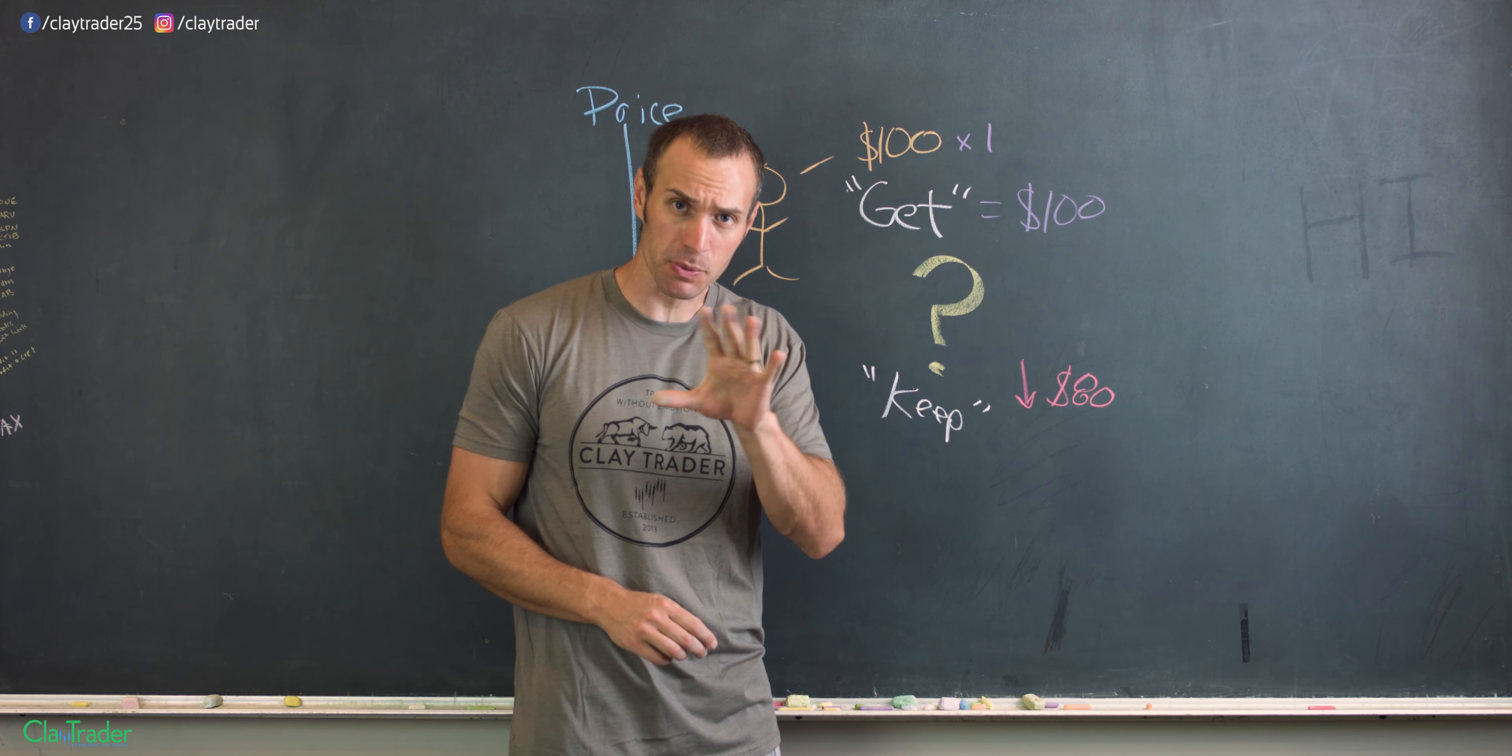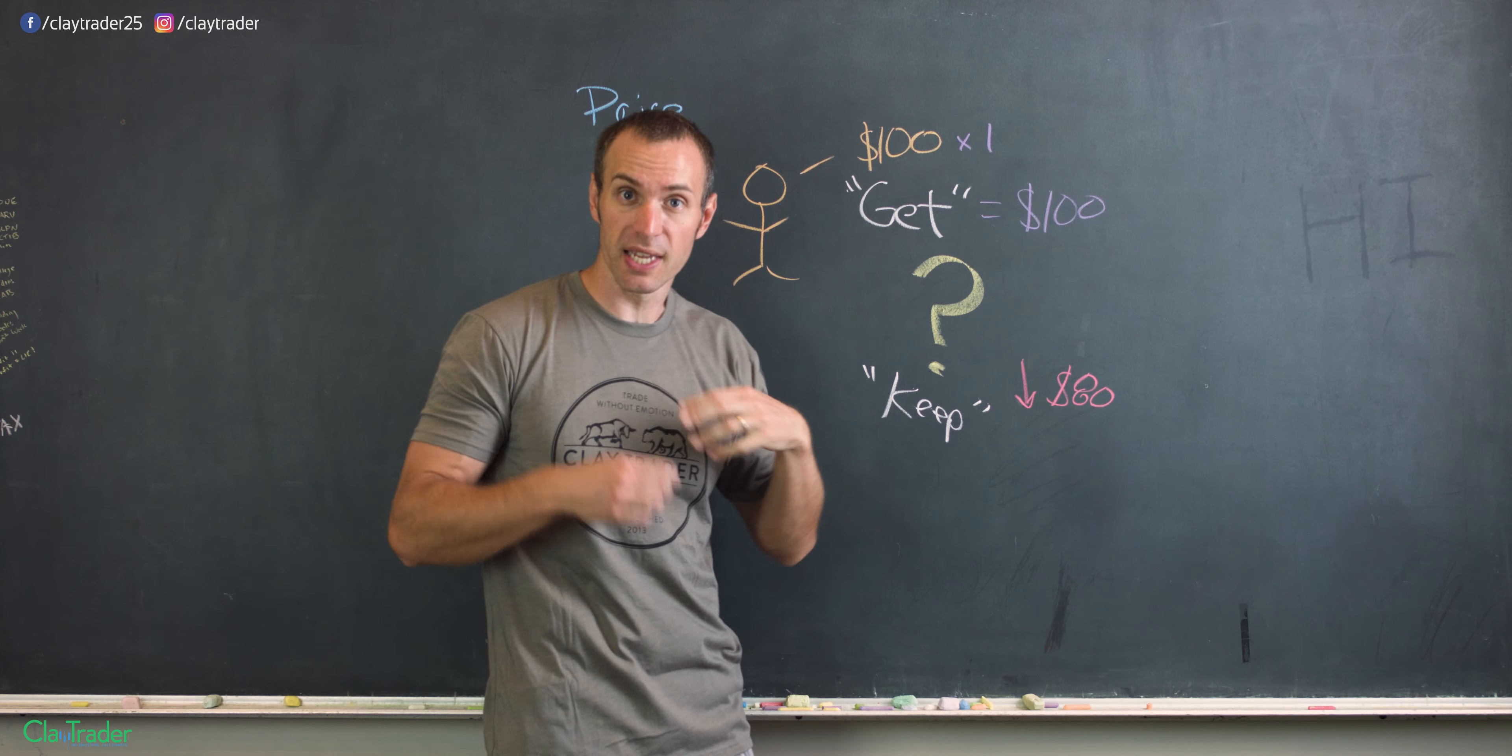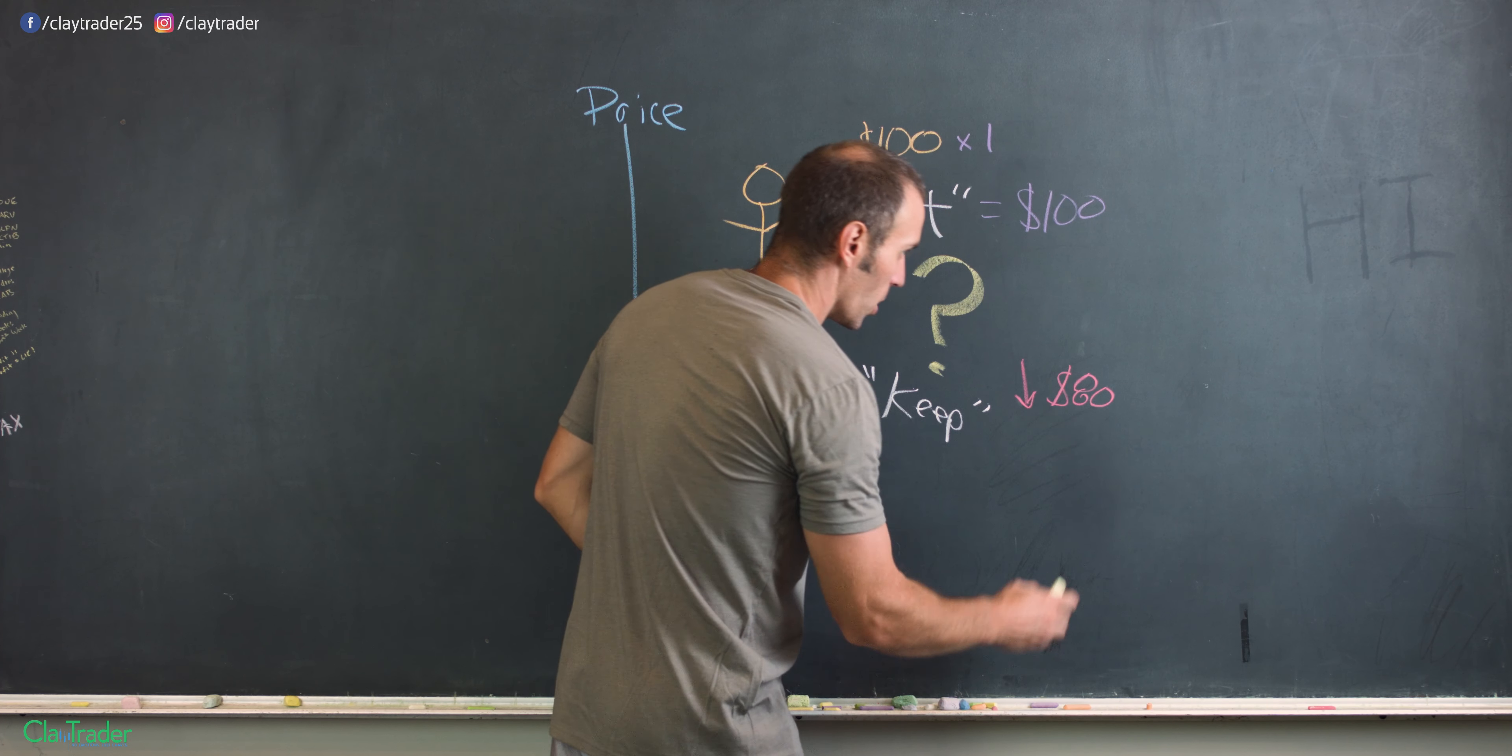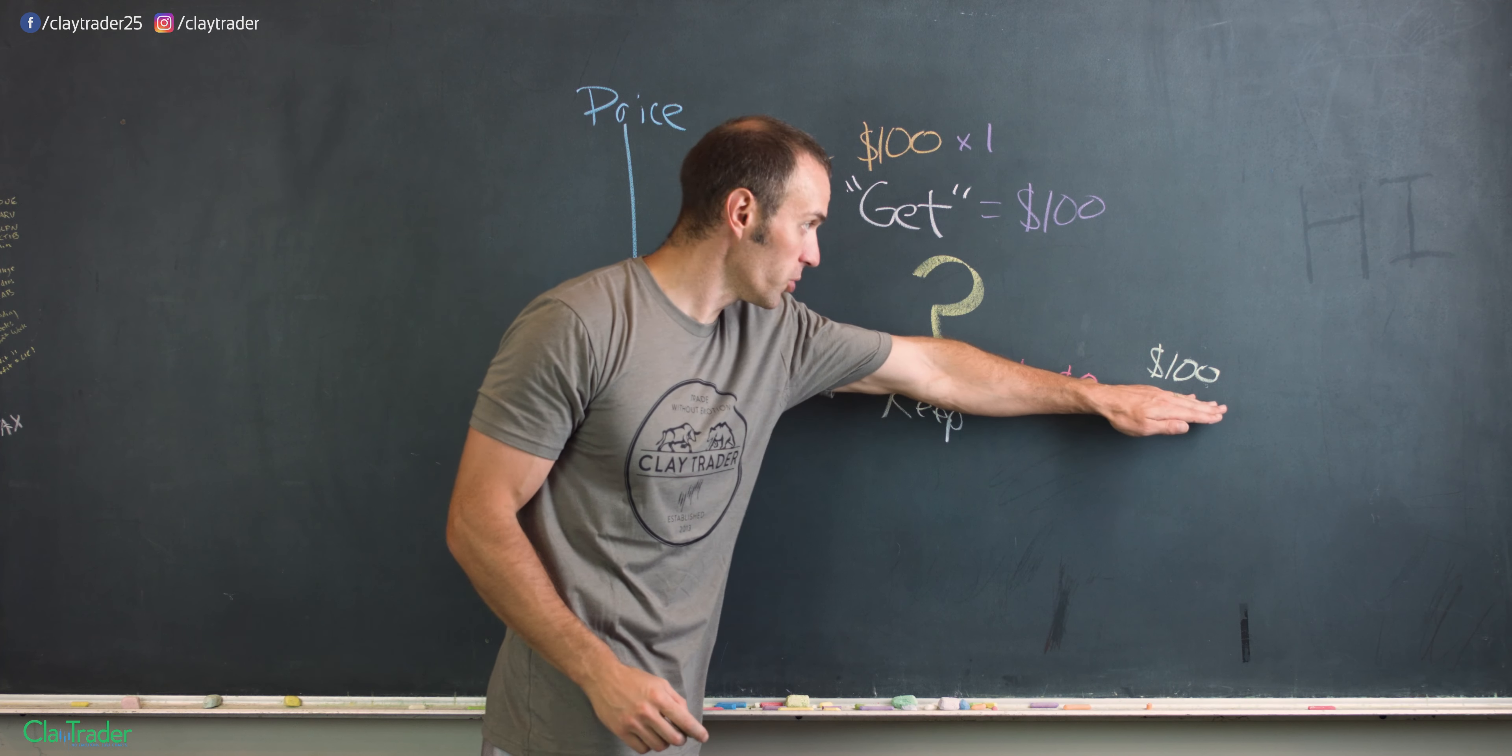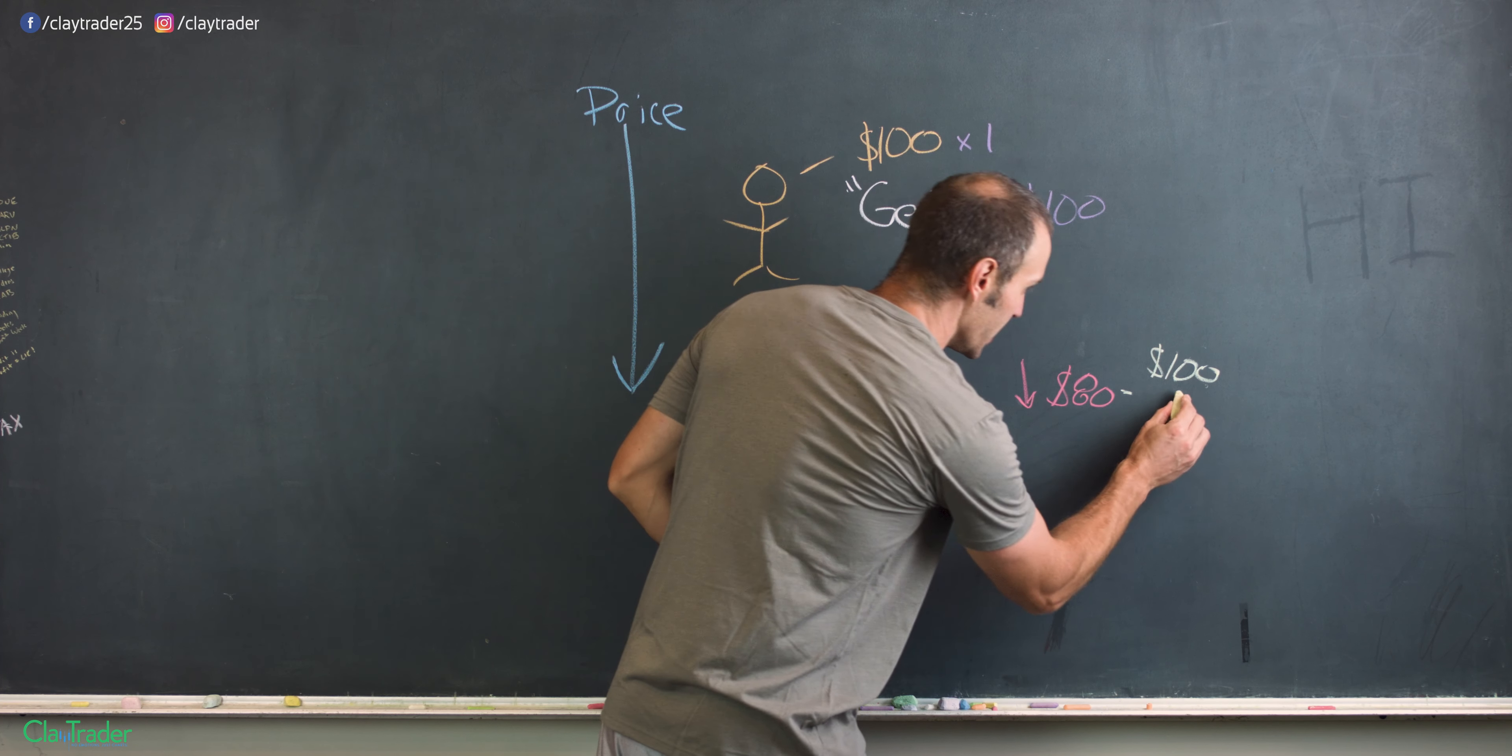How much money does John have, though? Well, he's got $100 to go out there and do shopping with. That's what he got when he sold. So what does that mean in terms of what he gets to keep? Well, if he originally had the $100, but then he'd go out there and has to use $100 of that to buy back the shares at $80.